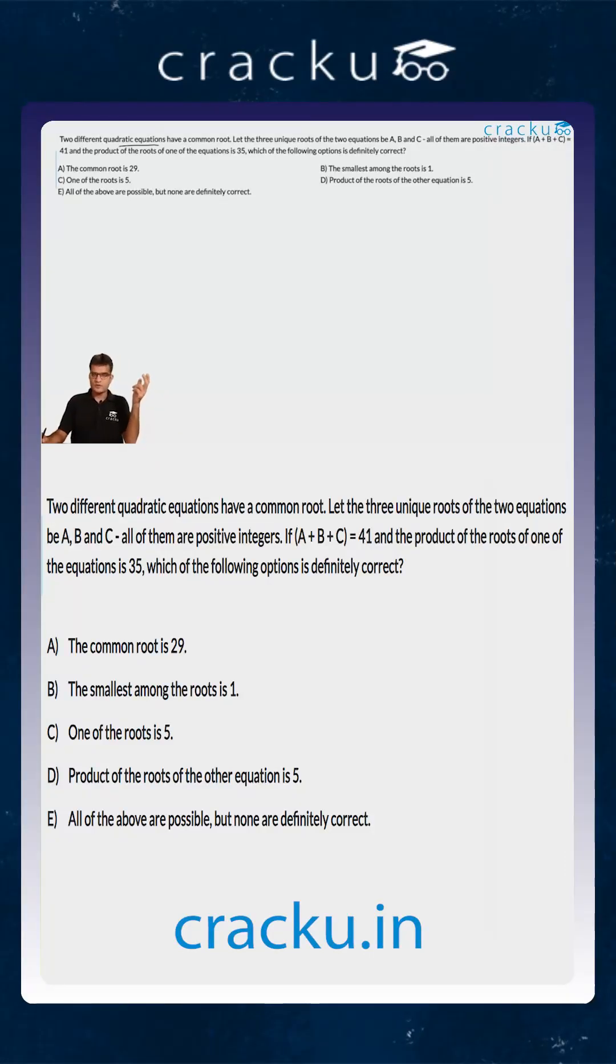In this equation, we are told that there are two different quadratic equations with one common root, and three unique roots a, b, and c, such that the sum a plus b plus c equals 41 and the product of the roots of one of the equations is 35.